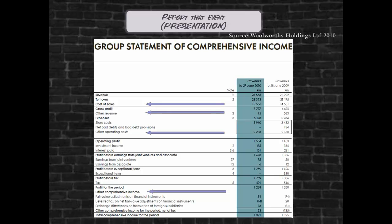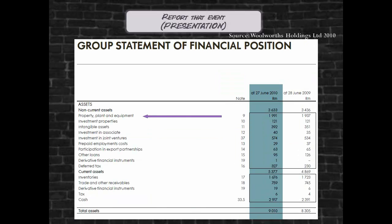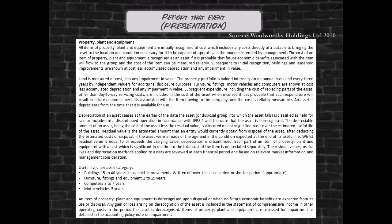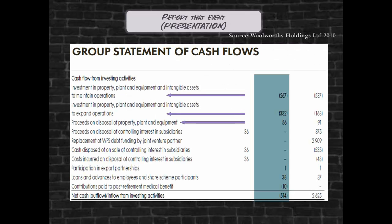IAS 16 contains numerous rules for presentation and disclosure of property, plant and equipment. The purpose of these rules is to ensure users receive the information necessary to make economic decisions. This objective is in line with the objective of financial reporting as contained in the conceptual framework. Significant detail regarding changes in the property, plant and equipment balance from the beginning to the end of the reporting period is required. Detail should also be disclosed relating to the accounting policy choices and estimates made by management. Although not specifically considered by IAS 16, one should not forget the cash flow implications of property, plant and equipment.